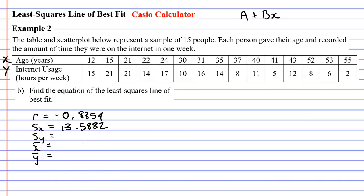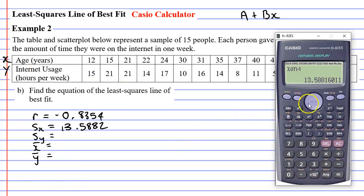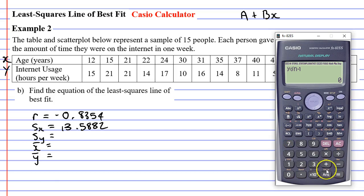You might be wondering what x means here. Looking at the table, x represented our top row, so Sx basically means the standard deviation for our top row — more specifically, the sample standard deviation. When we find Sy we're just finding the standard deviation for the second row, or row y. Going back in: shift 1, stat mode, var, number 5, and y sigma n minus 1 — or some calculators say Sy — is number 7, giving us 5.6188.